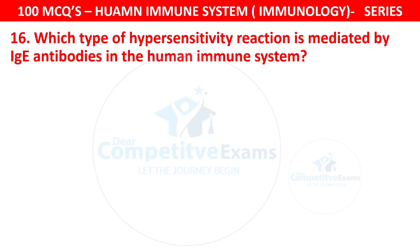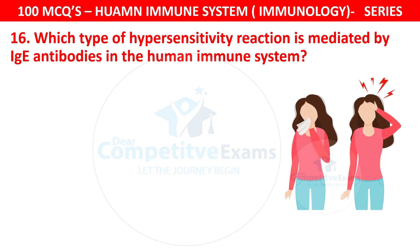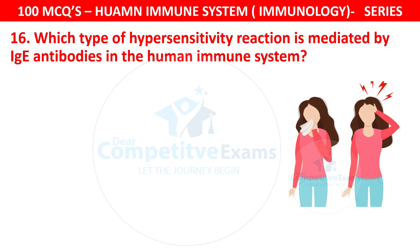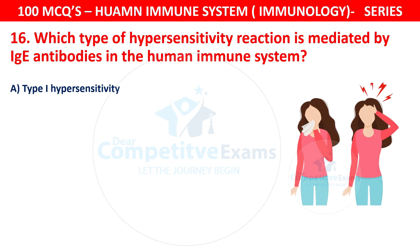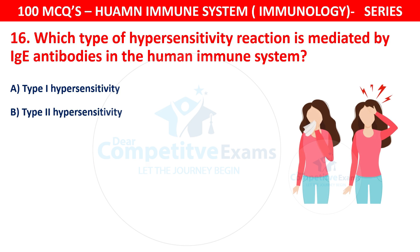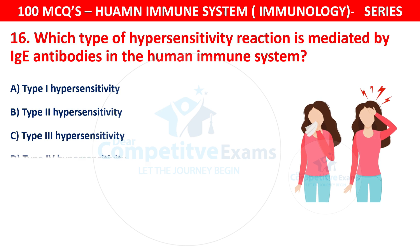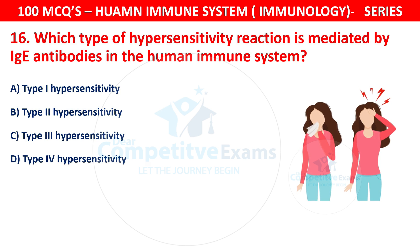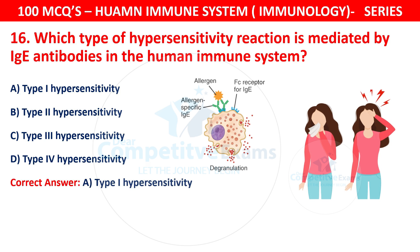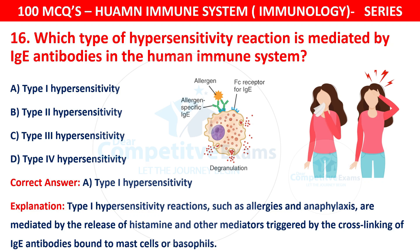Question 16. Which type of hypersensitivity reaction is mediated by IgE antibodies in the human immune system? The options are type 1, type 2, type 3, or type 4 hypersensitivity. The correct answer is A — type 1 hypersensitivity. Type 1 hypersensitivity reactions, such as allergies and anaphylaxis, are mediated by the release of histamine and other mediators triggered by the cross-linking of IgE antibodies bound to mast cells or basophils.